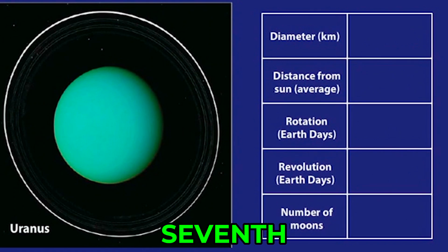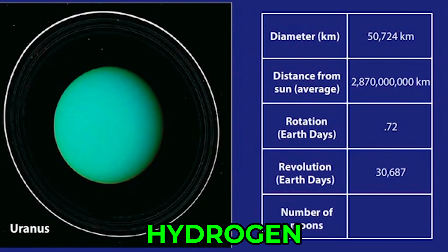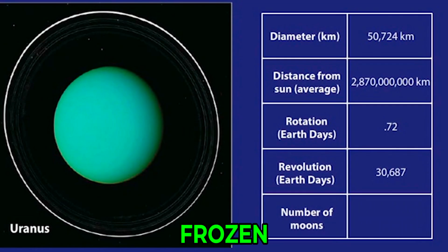Uranus, the seventh planet from the Sun, is the first planet to be discovered with the use of a telescope. Its cloudy atmosphere is primarily made of helium and hydrogen, but also has higher concentrations of frozen ammonia, water, and methane. Uranus is sometimes referred to as an ice giant. This planet has two sets of rings and 27 known orbiting moons.